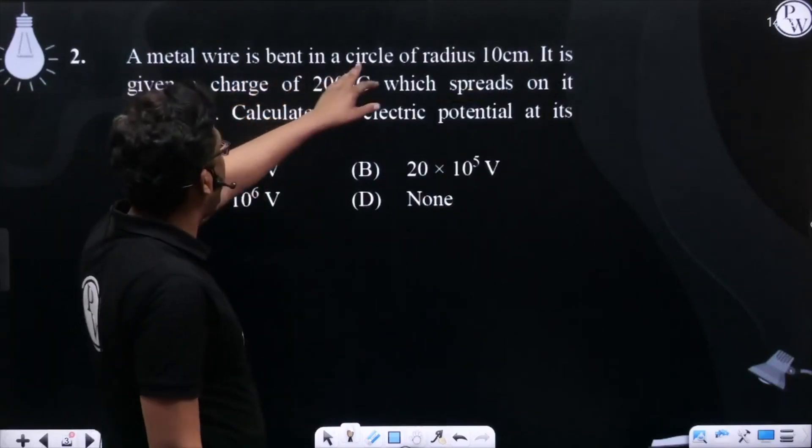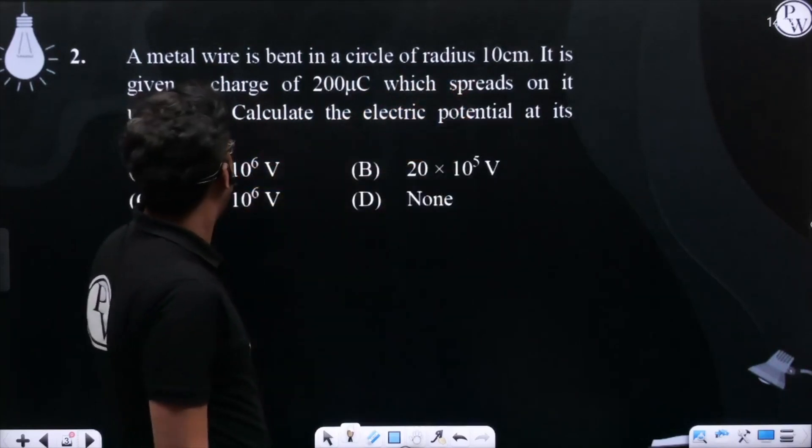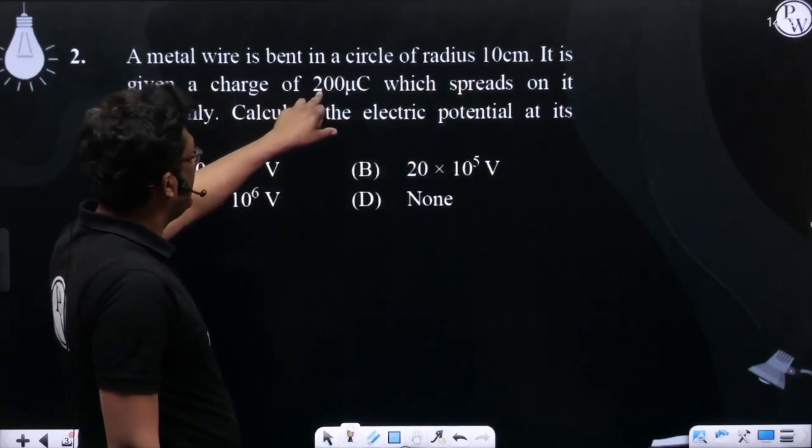A metal wire is bent in a circle of radius 10 centimeters. It is given a charge of 200 coulombs.